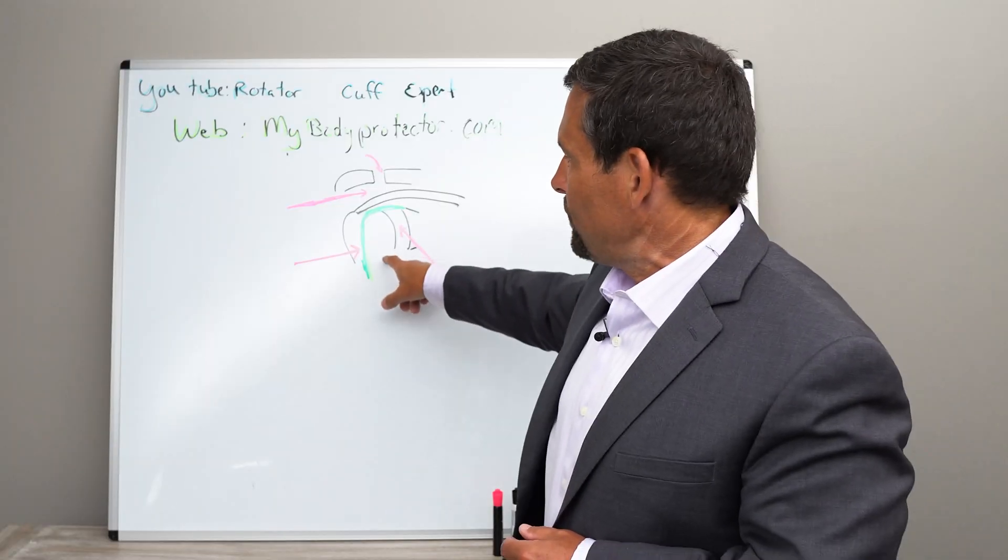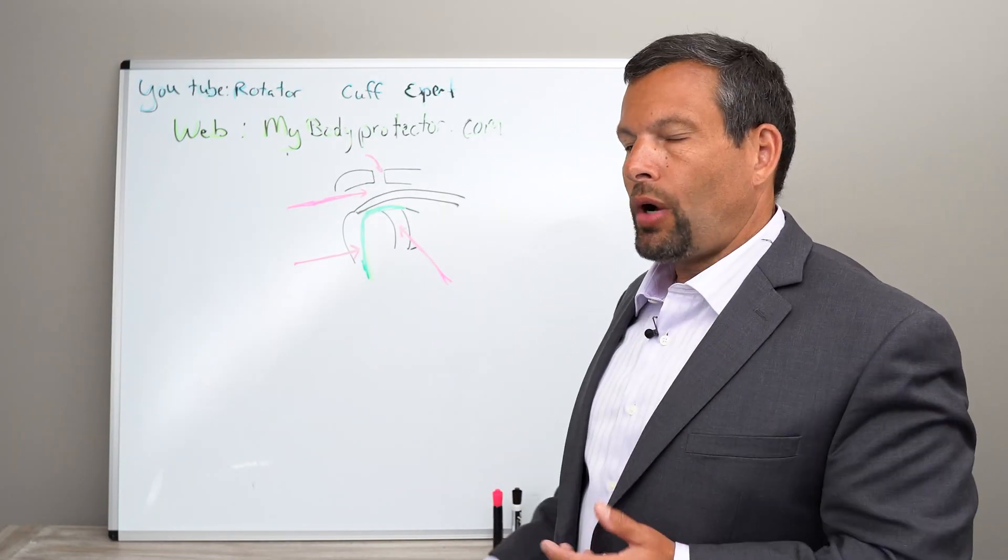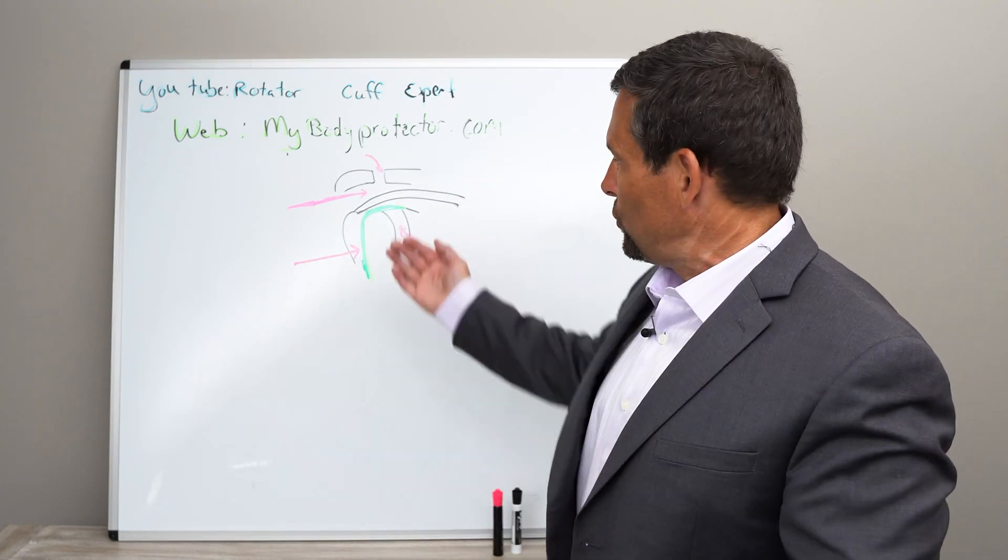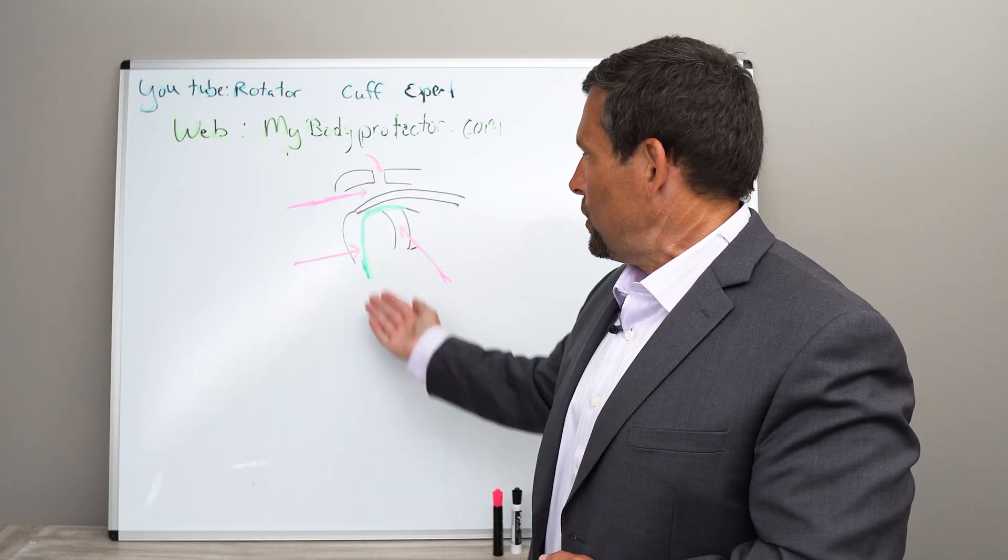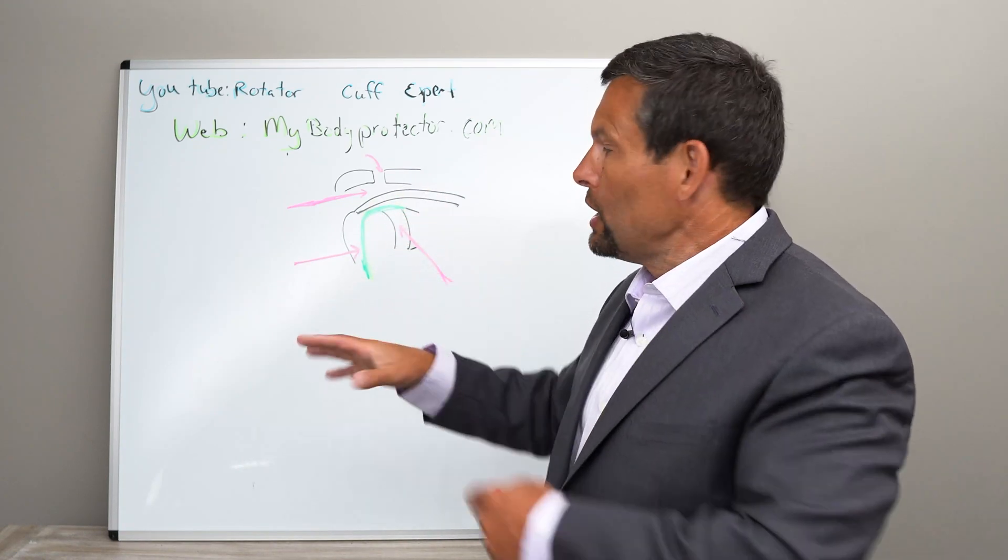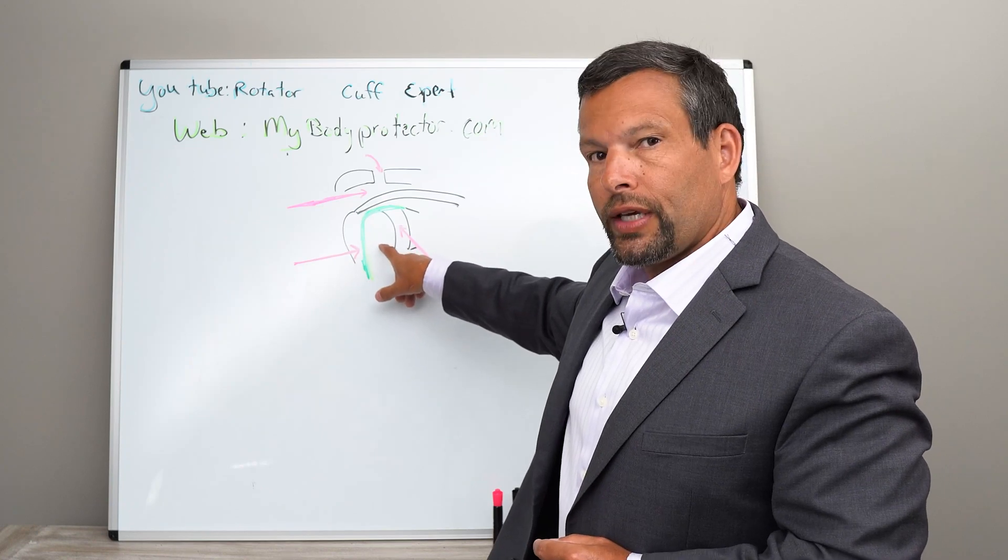The biceps, the bicipital groove is deep in here. And so oftentimes we'll use the ultrasound and we can actually see the little groove in the front of your humerus, the upper arm bone. We can see that groove and we can put the injection into the groove. So oftentimes we'll use the ultrasound for this.